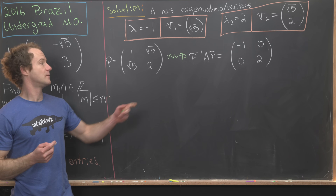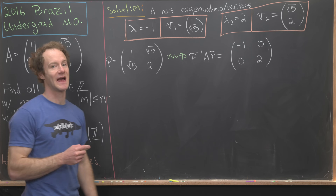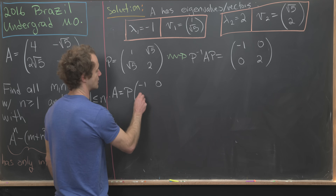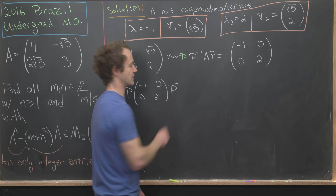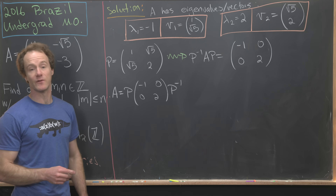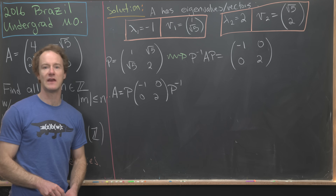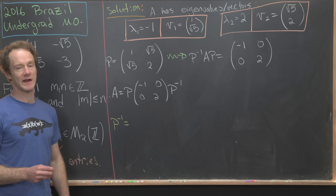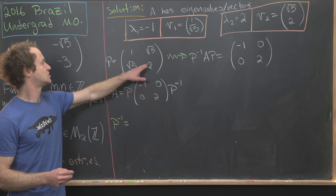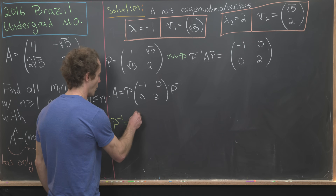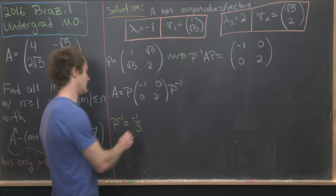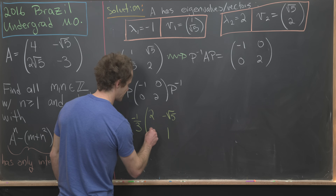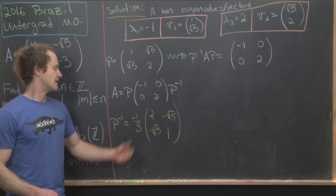This allows us to write A = P·D·P⁻¹ = P·[−1, 0; 0, 2]·P⁻¹. We compute P⁻¹ using the standard 2×2 inverse formula: determinant of P is 2 − 5 = −3, so P⁻¹ = (−1/3)·[2, −√5; −√5, 1], giving P⁻¹ = [−2/3, √5/3; √5/3, −1/3].